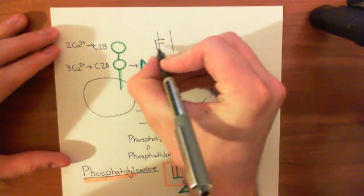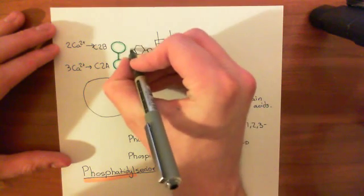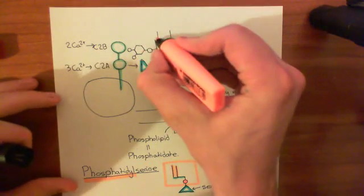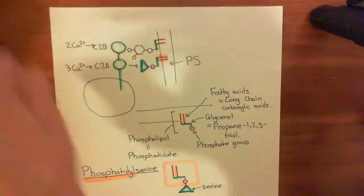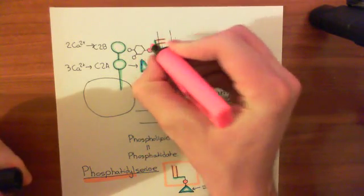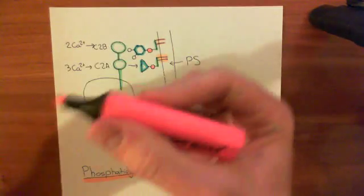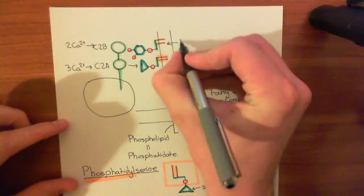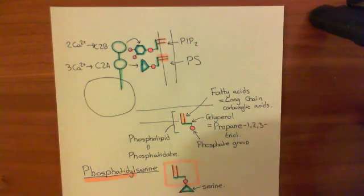Here is some PIP2 in our phospholipid bilayer. Here is the inositol ring — it's got the phosphate group of the fourth carbon and the phosphate group of the fifth carbon. In orange we have the long-chain carboxylic acid groups; in green the glycerol molecule. Then with the phosphate group of the third hydroxyl group of the glycerol molecule, the inositol group comes off that. You have two phosphate groups of the fourth and the fifth carbon of the inositol ring — that's PIP2. The C2B domain, when it has two calciums bound to it, binds to this PIP2 molecule in the phospholipid bilayer.